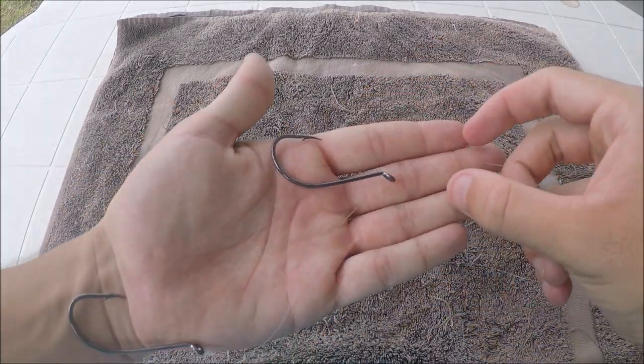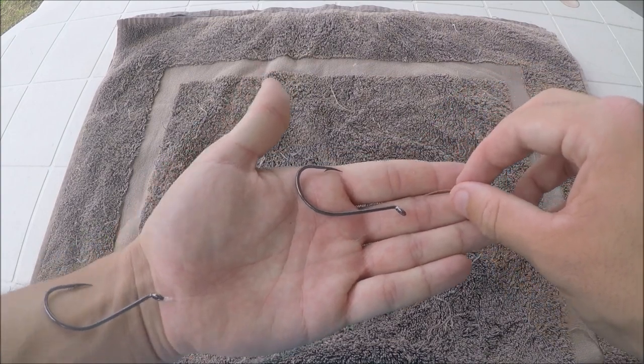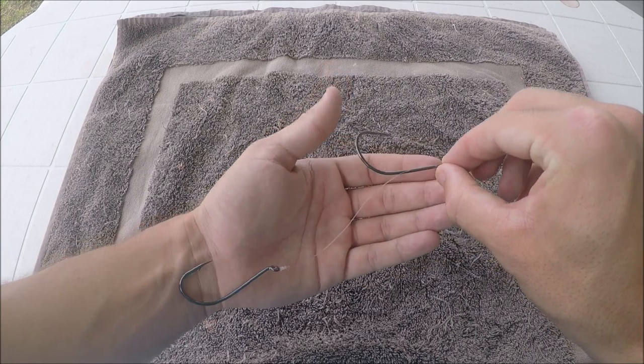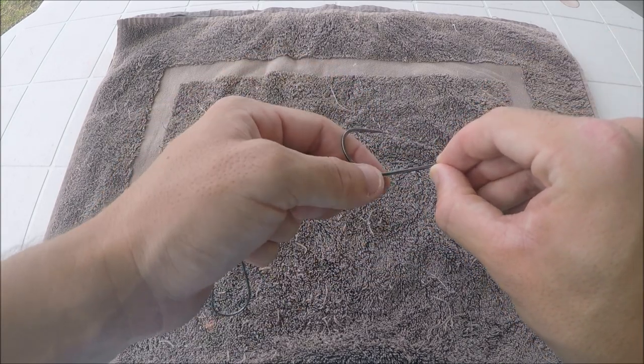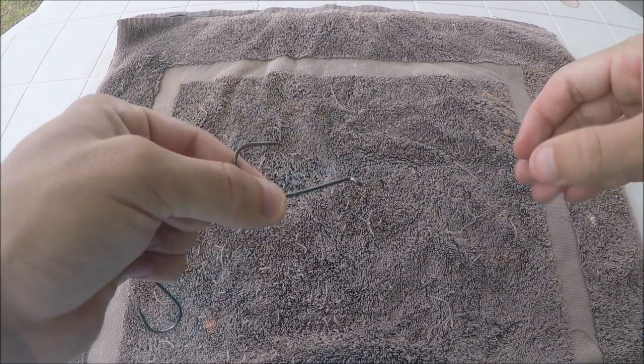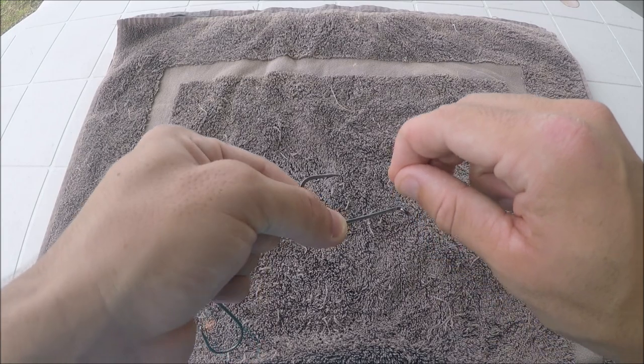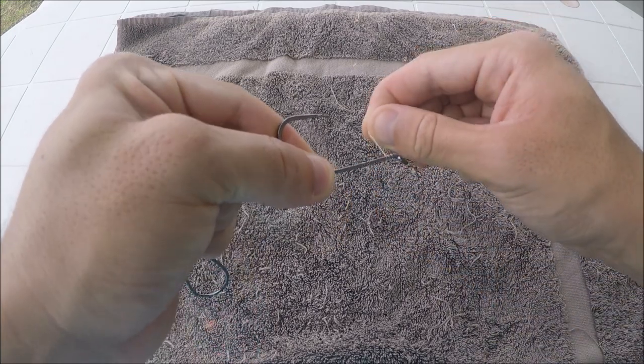So now that you've got this hook here tied on you're going to leave that one out of the way. Get this one at the right length and then what you're going to do is pinch the line down the back of the hook here. Pinch that tight. So then you're holding it like that. And you're just going to grab this line at the front and wrap it down around like this.